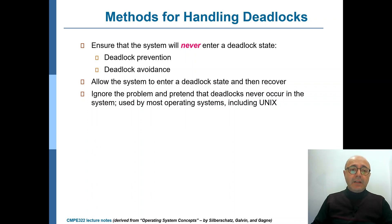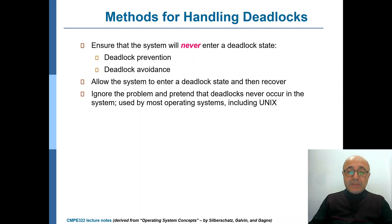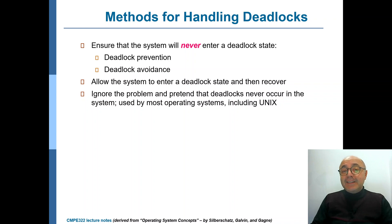How can we handle deadlocks? One way is to ensure that the system never enters a deadlock state. This can be done by deadlock prevention or deadlock avoidance — we'll talk about deadlock prevention in this video and avoidance in the next. Alternatively, you can allow the system to enter a deadlock state and then try to recover from it. One other approach, though it looks silly, is a very commonly used one: you ignore the possibility of a deadlock occurring.